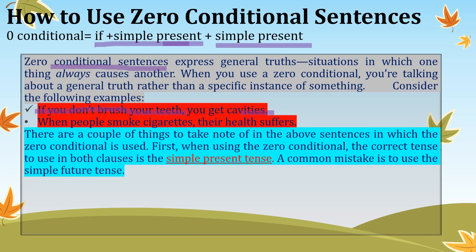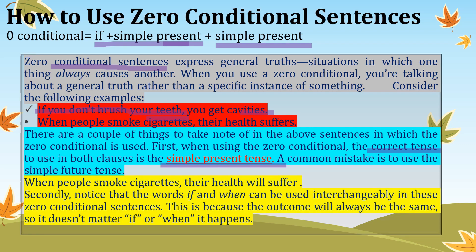There are a couple of things to note about zero conditional sentences. First, when we use the zero conditional, the tense to use in both clauses is the simple present. A common mistake is to use 'will' in the second clause, which is the future tense — that is incorrect here.